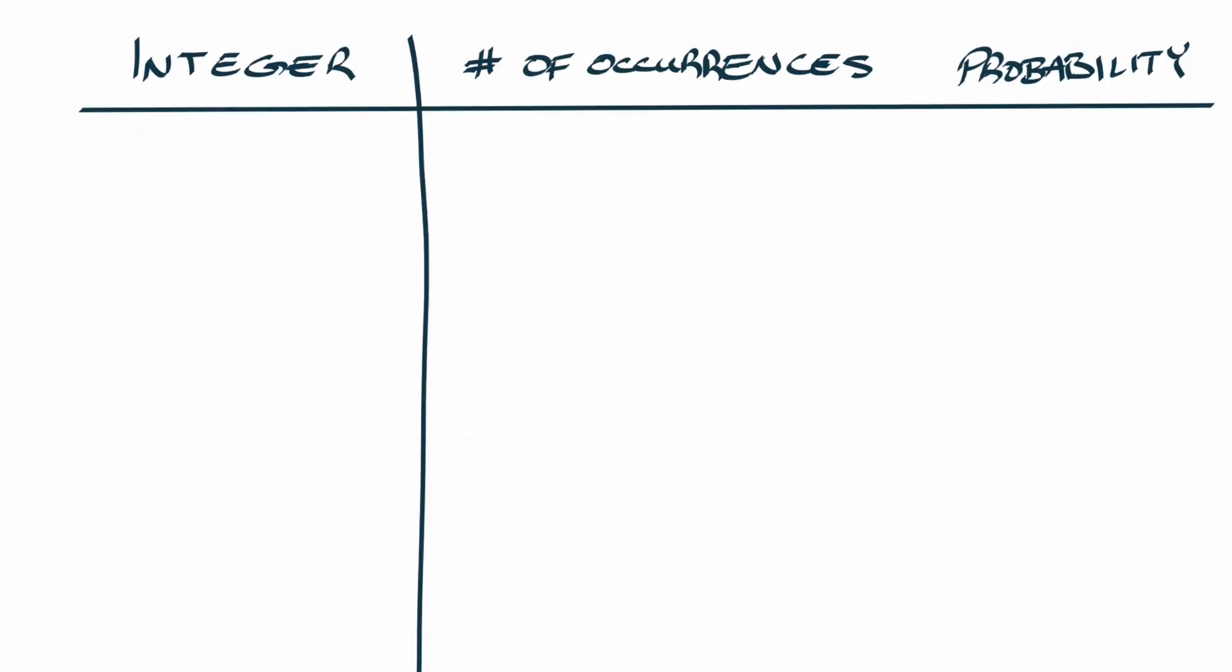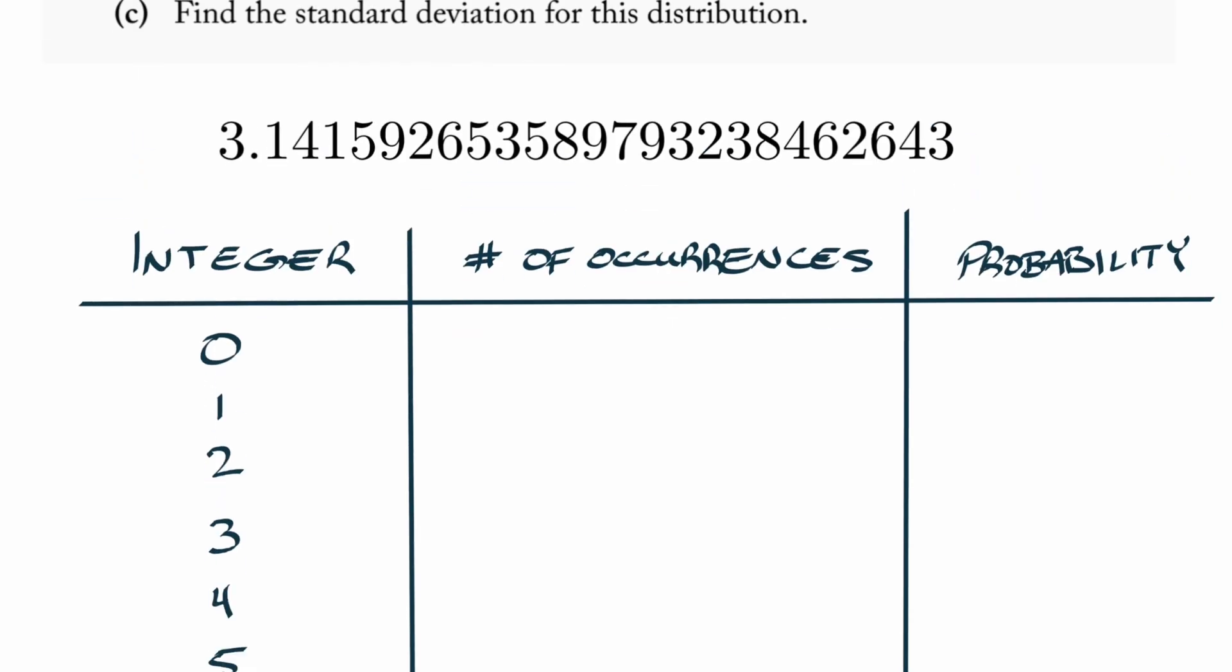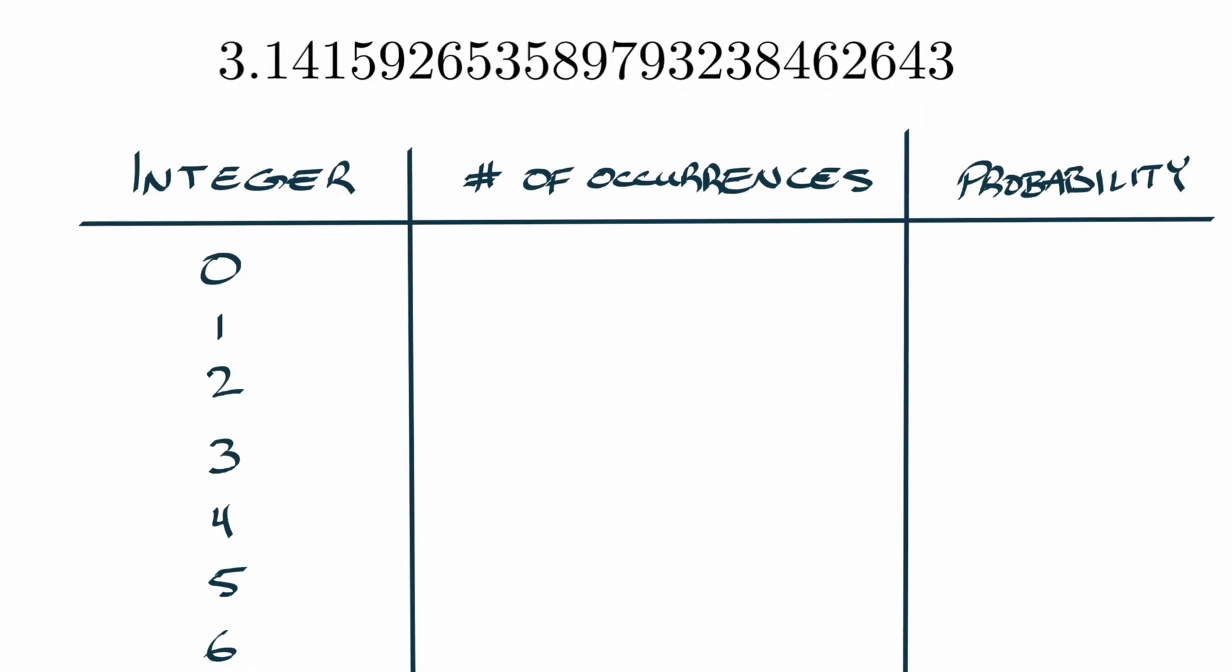Let's fill in the integers: zero, one, two, three, four, five, six, seven, eight, nine. Number of occurrences: how many times does zero occur? Zero occurrences. How many times does the digit one occur? That's going to be two times. How many instances of the digit two? We have three of those.